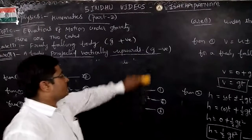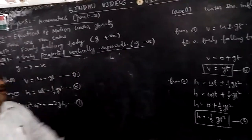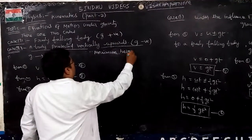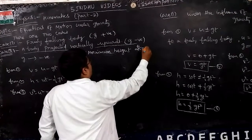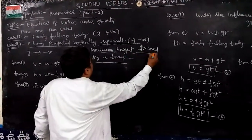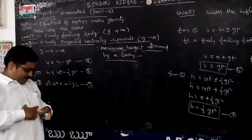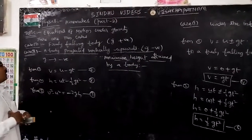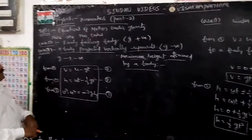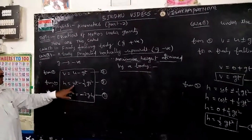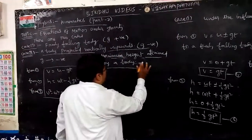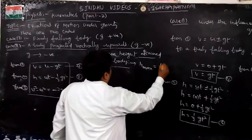Now let us discuss the maximum height attained by a body when a body is projected vertically upwards. Let us see the expression for maximum height attained by a body when a body is projected vertically upwards. From the set of equations 7, 8, and 9, these are the equations of motion for a body projected vertically upwards: V = U - GT, H = UT - ½GT², and V² - U² = -2GH. We have to derive the equation H_max = U²/2G.